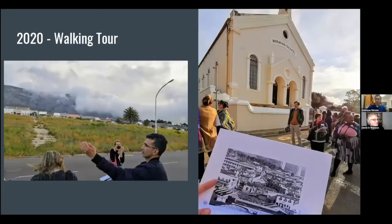Up until recently, I've been taking groups of people on walks of District 6, combining maps and old photographs on the walk. On the right picture is a group standing in front of the Moravian Chapel, which was one of the few buildings that survived the apartheid demolitions, and someone is holding up an old photograph of what it looked like pre-demolition.